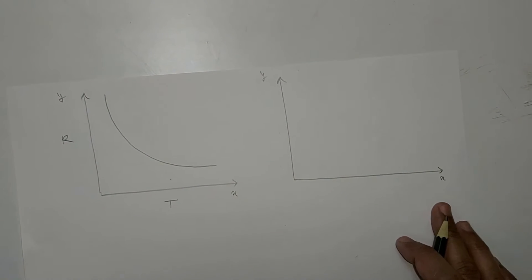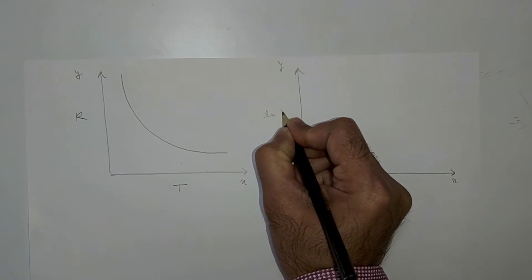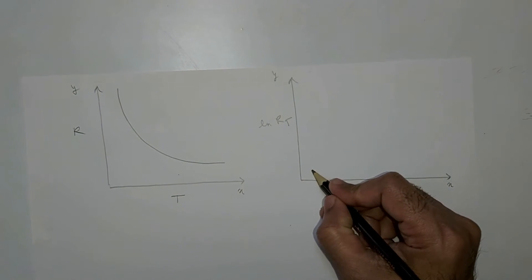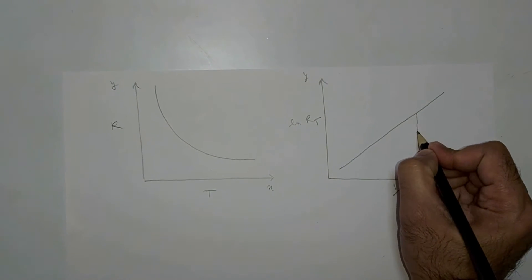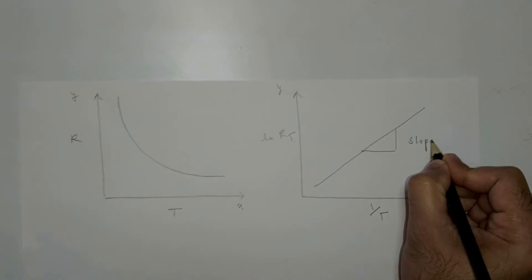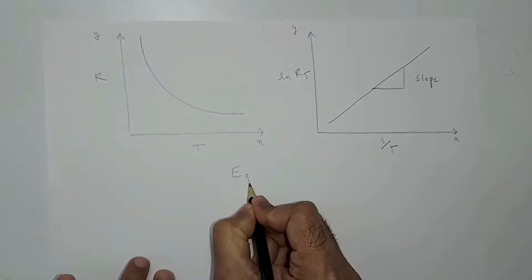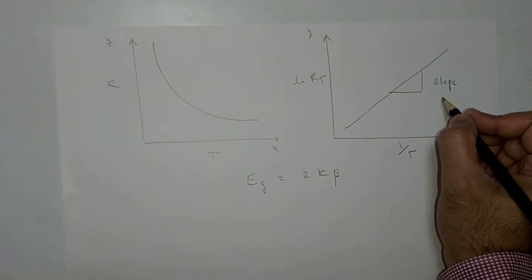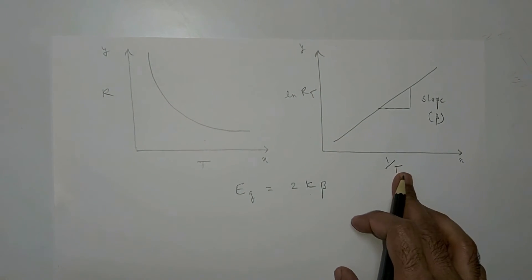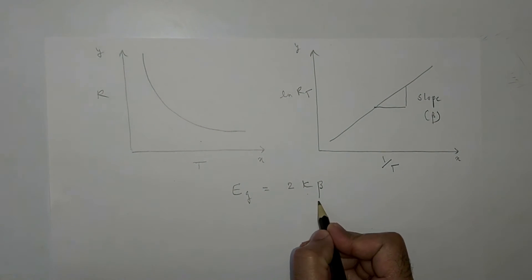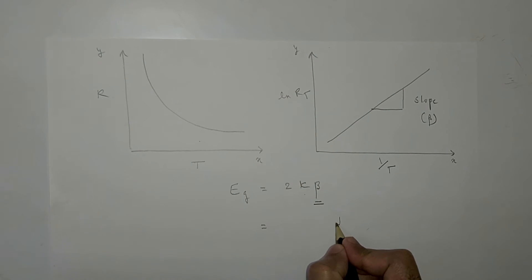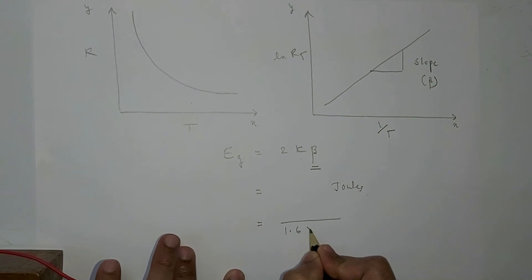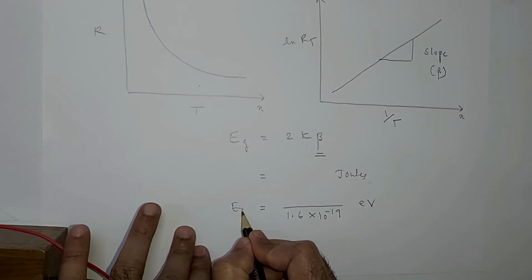The second and more important graph for calculating the energy gap is ln(R) versus 1/T — ln(R) on the Y-axis and 1/T on the X-axis. The energy gap is equal to 2k × β, or we can write it as 2k × slope, where β is the slope of this graph. Substitute all values to get the energy gap in joules, then divide by 1.6 × 10⁻¹⁹ to convert to electron volts.